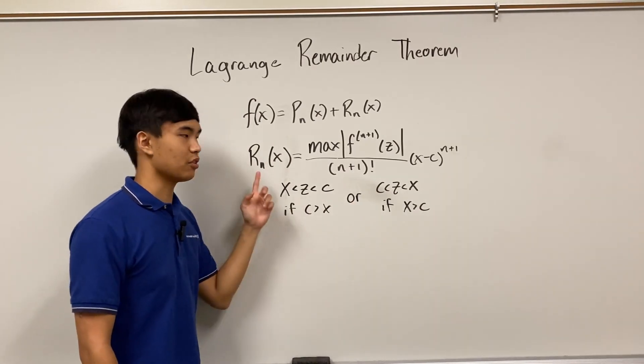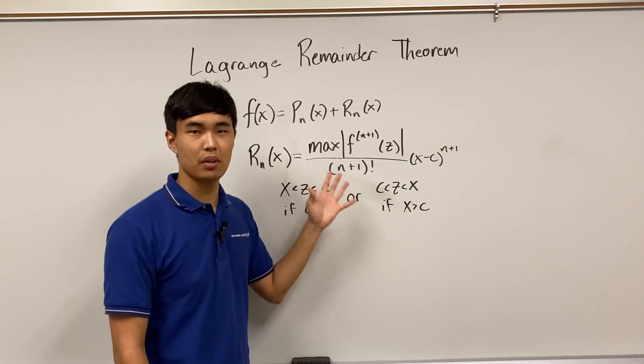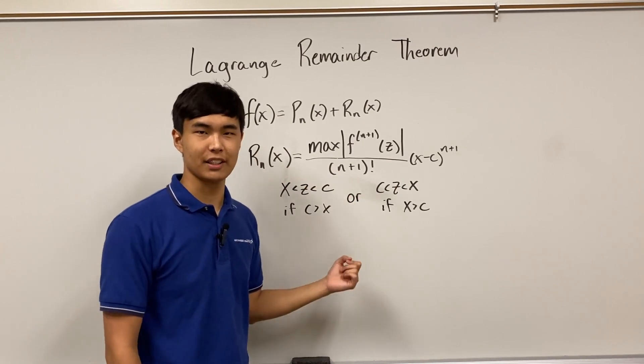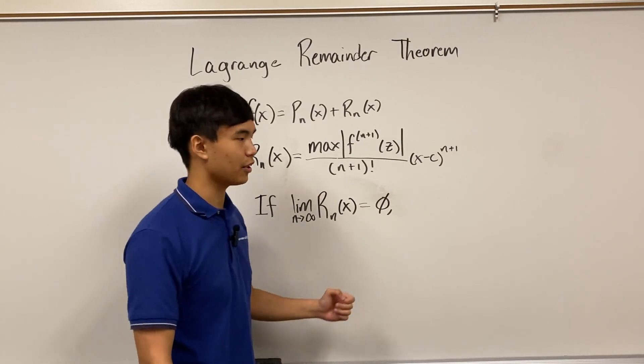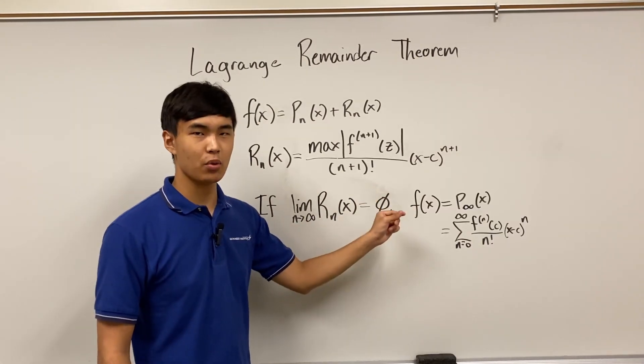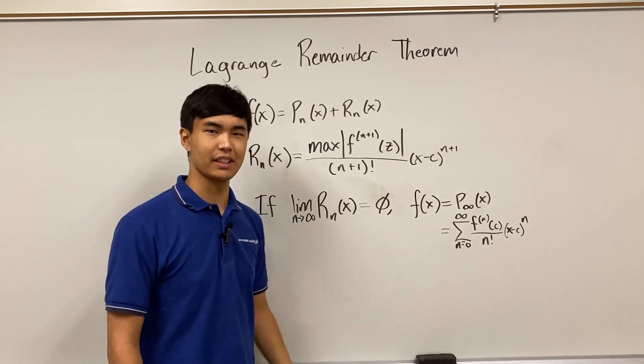So we've established that this remainder represents the maximum possible error in the approximation of f(x). So then it logically follows that if this remainder as n goes to infinity goes to zero, then f(x) has to equal the Taylor series if the remainder is zero.